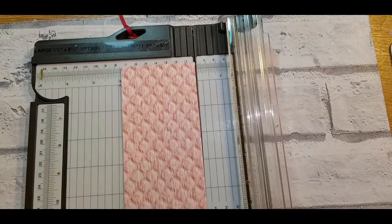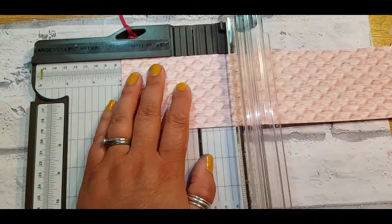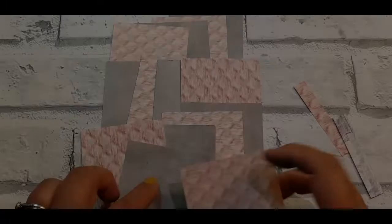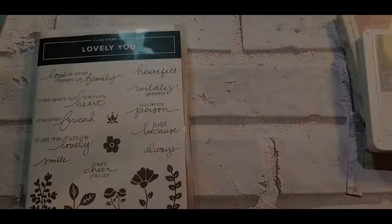So I'm using this gorgeous In Good Taste paper and decided to go pinks and greys. I'm just going to cut down strips of 2 and 5/8—so just a couple of notches before the 3 inches—and 2 by 5/8 squares.